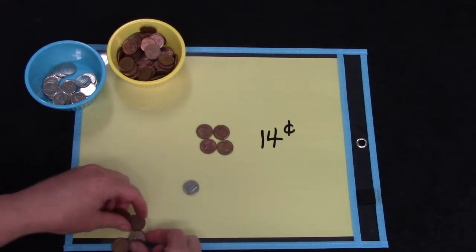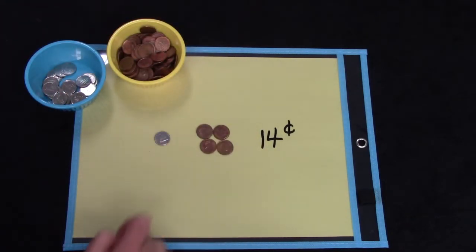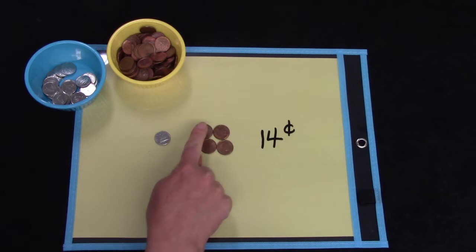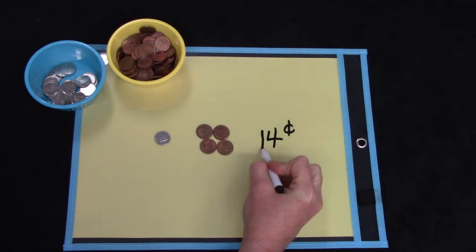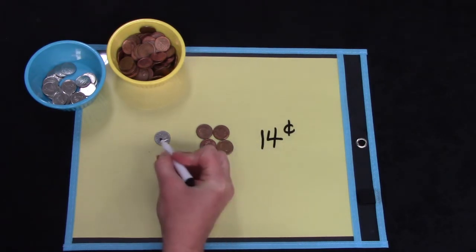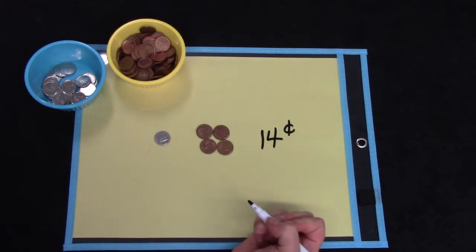And I will put those in my little bowl and I can replace it with a dime. 10, 11, 12, 13, 14. I still have 14 cents. Our tens place shows us that we have one group of 10 or a dime and we have four ones or four pennies. 14 pennies is the same as one dime and four pennies.